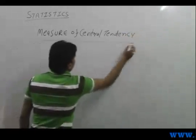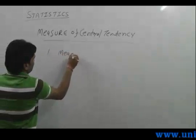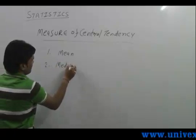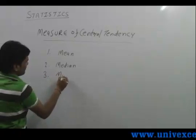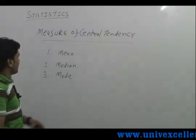There are three measures of central tendency. One is mean, second is median, and third is mode.